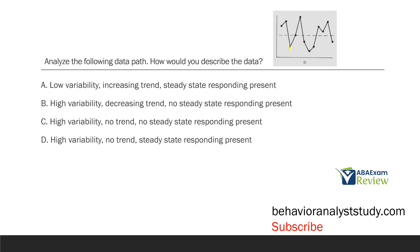The data path goes up one, then well below the average, then back up, all the way back down, back up, back down. Is there any real trend? When you're analyzing data, first ask yourself, is there a trend? Here, not really — we're increasing, we're decreasing, increasing, decreasing, increasing, and decreasing. There's no true trend to this data.